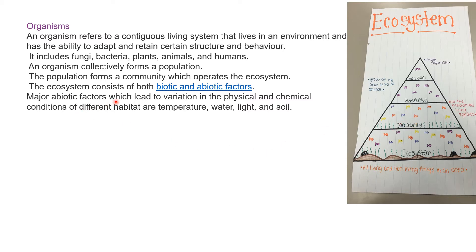The ecosystem consists of both biotic and abiotic factors. Biotic factors means living organisms, and abiotic factors means non-living things. Abiotic includes soil and water, while biotic includes fishes, grasses, leaves and plants present in the water — together this forms an ecosystem. The major abiotic factors which lead to variation in the physical and chemical conditions of different habitats are temperature, water, light and soil.